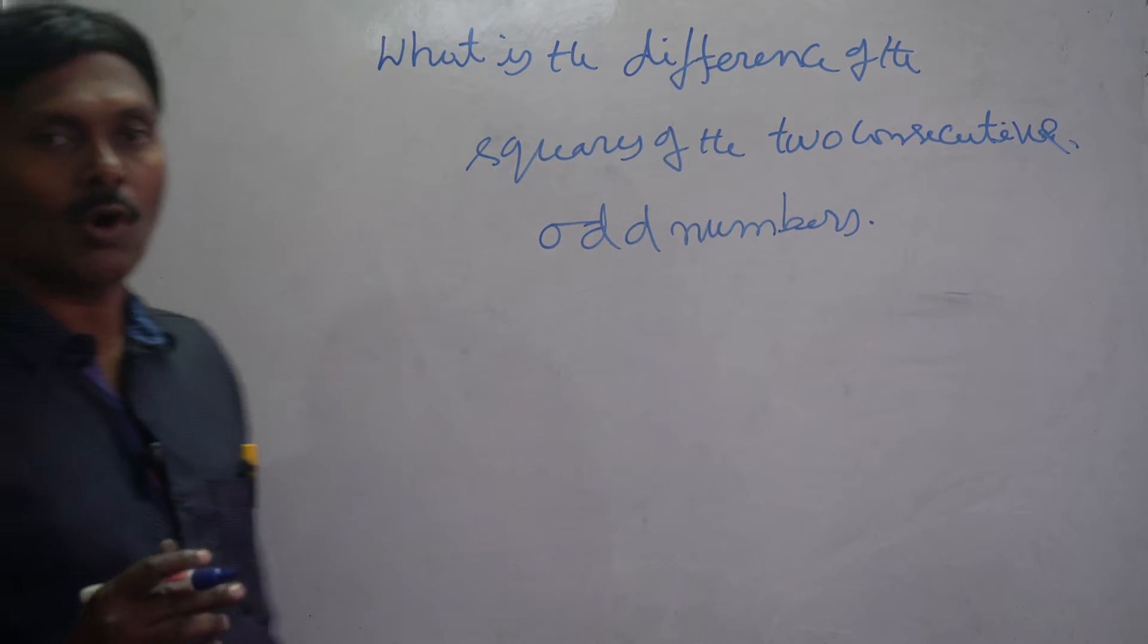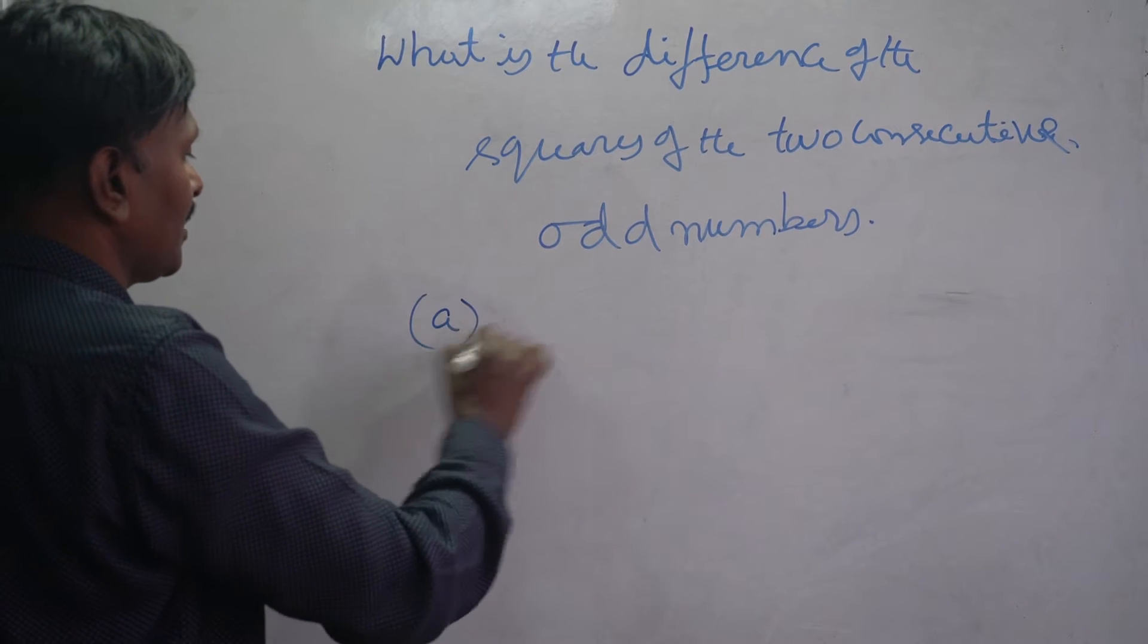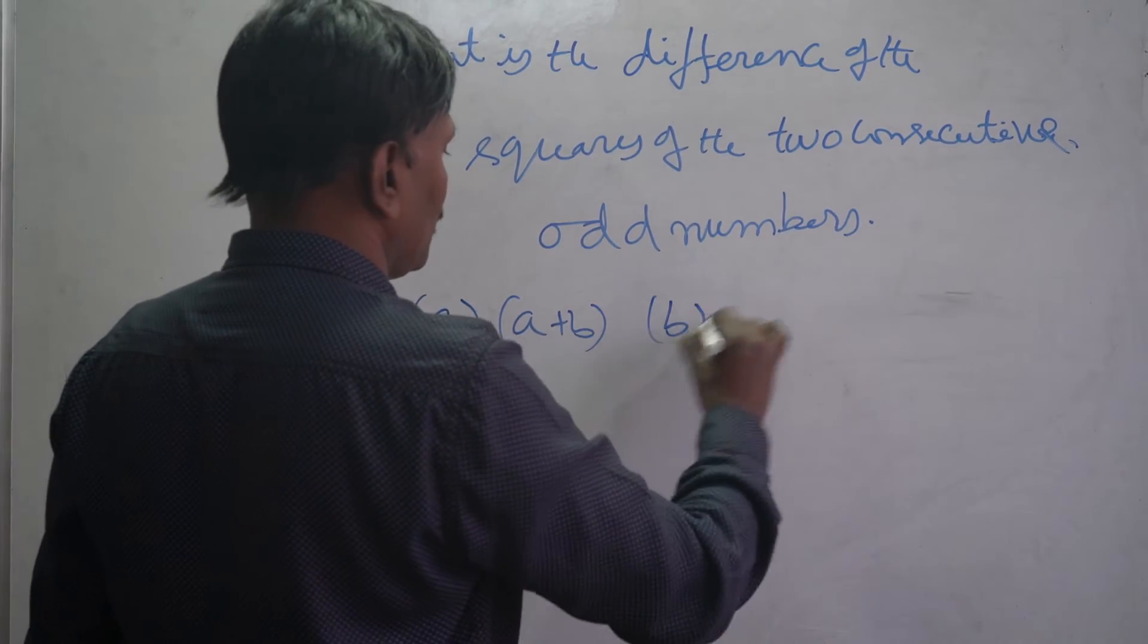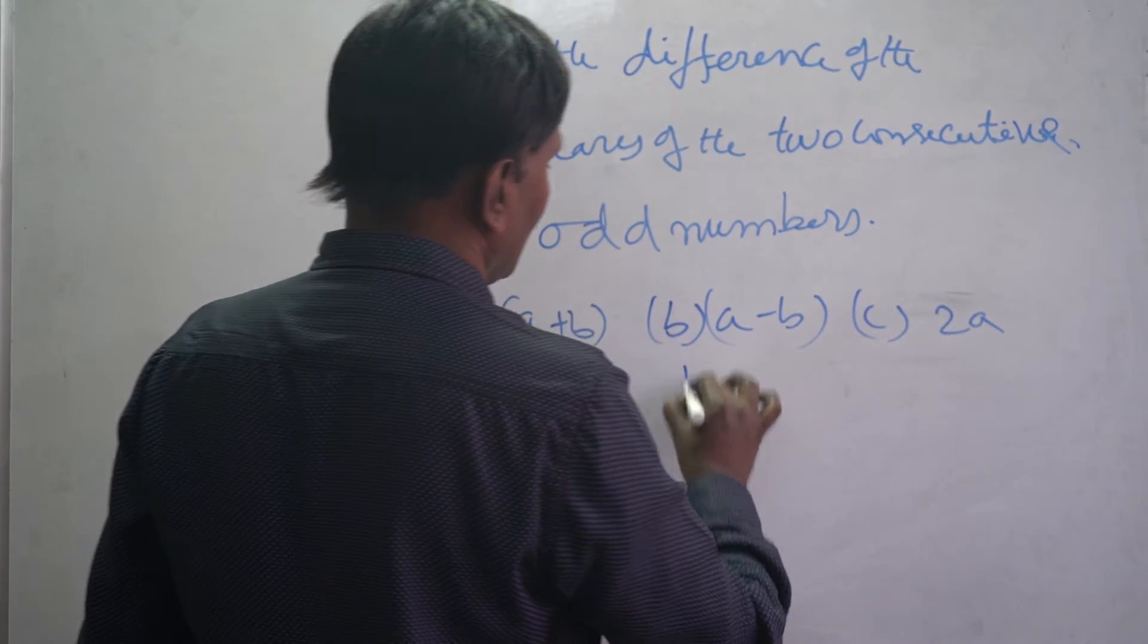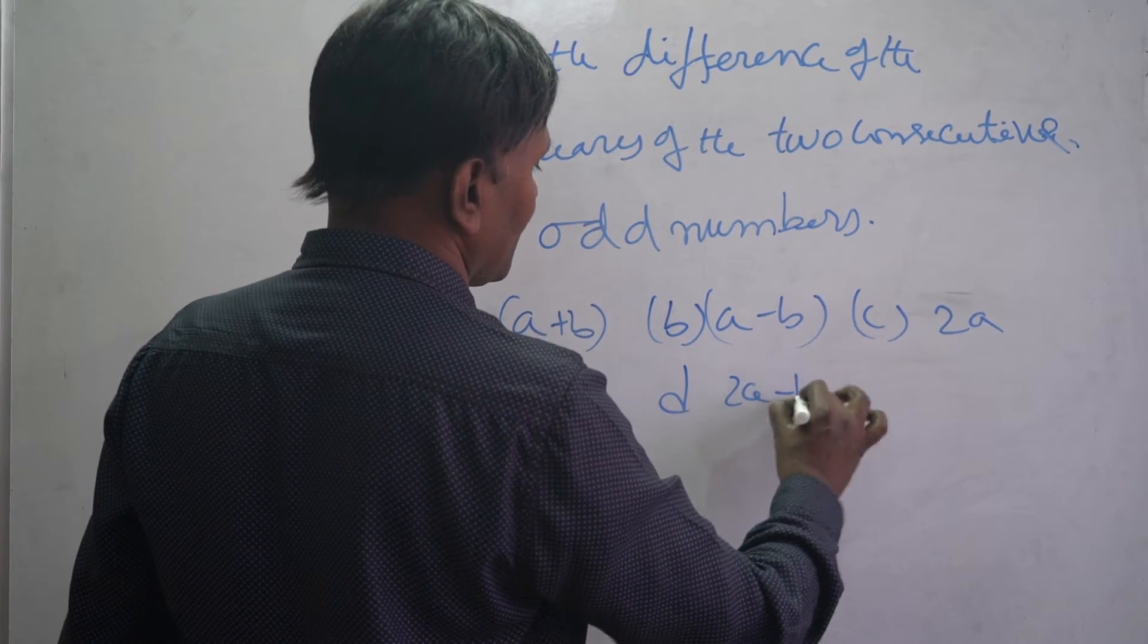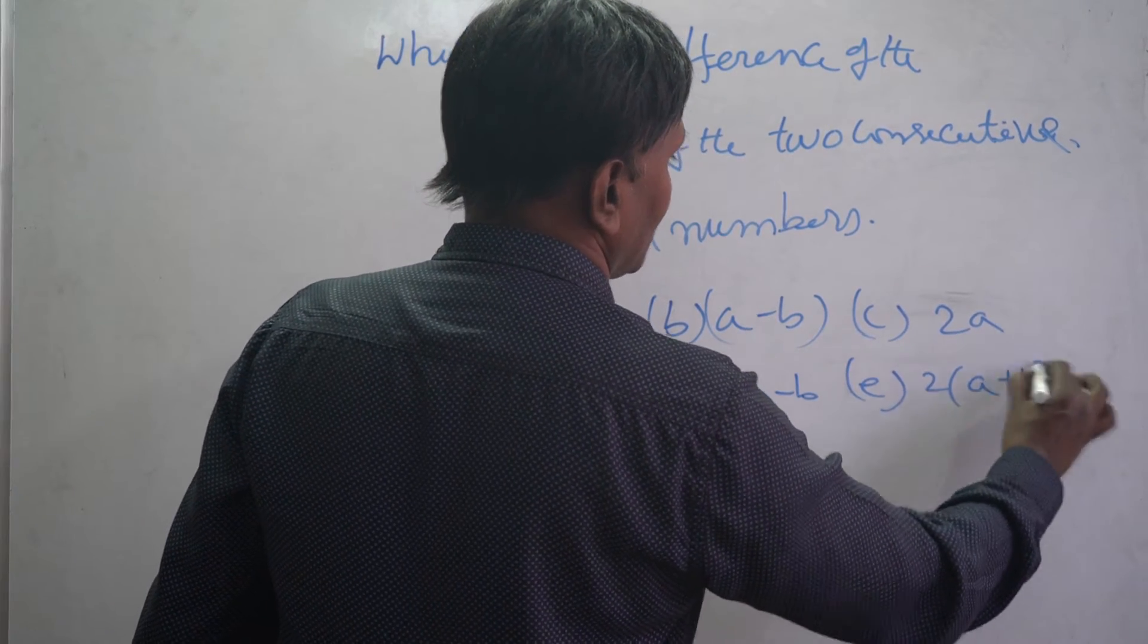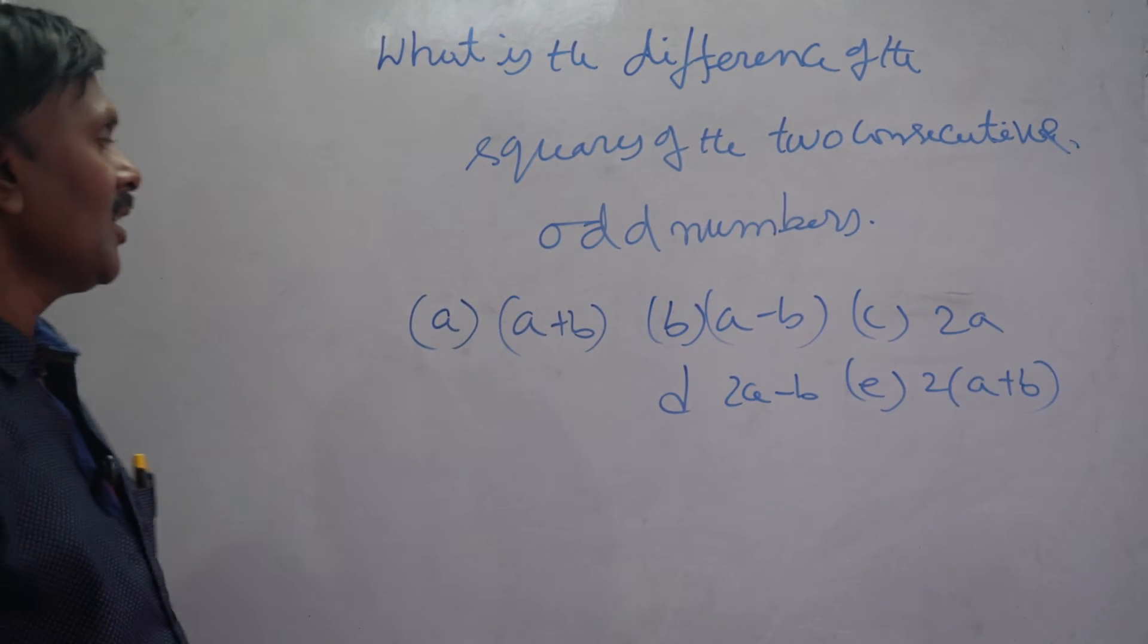Answers like: A is equal to a+b, B is equal to a-b, C is equal to 2a, D is equal to 2a-b, or E is equal to 2(a+b). They may ask such type of questions.